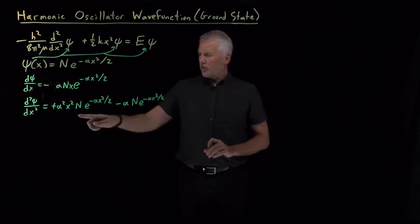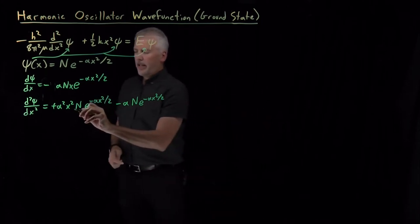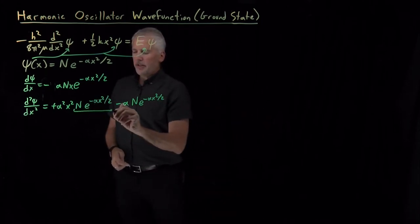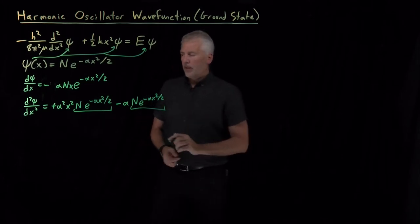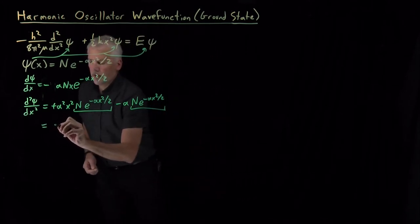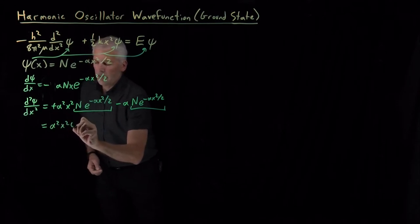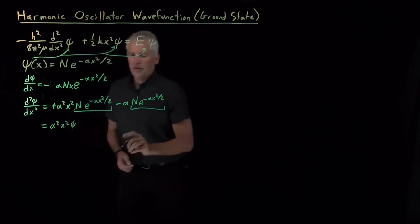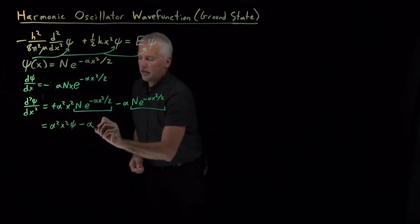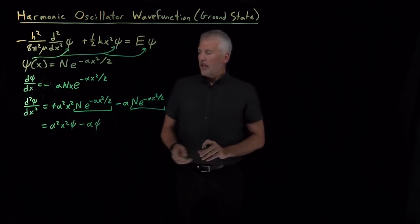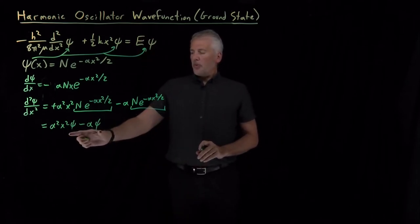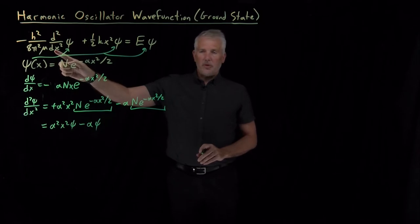Looking more closely at that, we see that n e to the minus alpha x squared over 2 shows up in this derivative. So let's simplify by writing it as alpha squared x squared times the original wave function, minus alpha times the original wave function. That will help when we go to plug the second derivative into Schrödinger's equation.